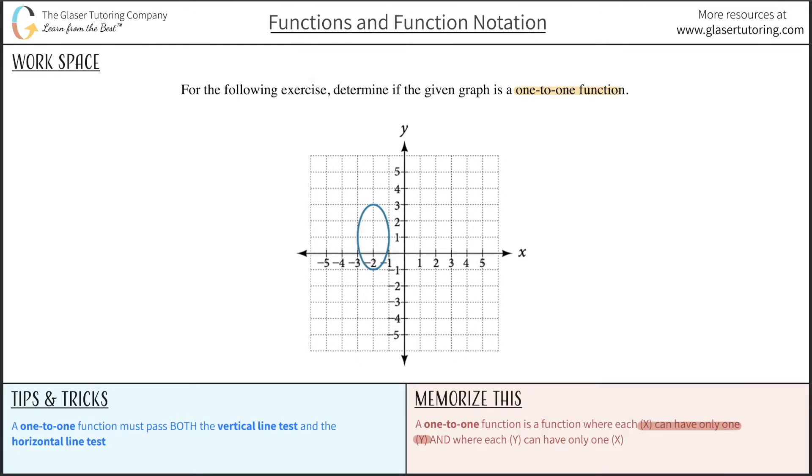So that's a function at a minimum. And then the second part is where each y can have only one x. Now that is the one-to-one part.